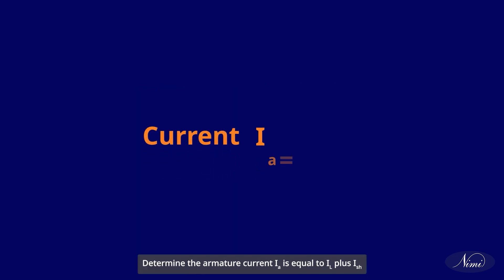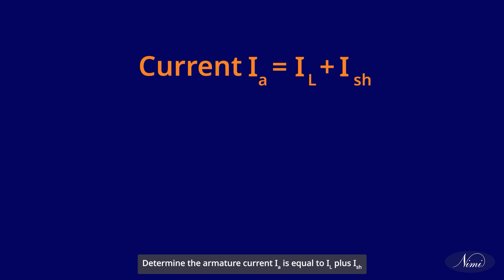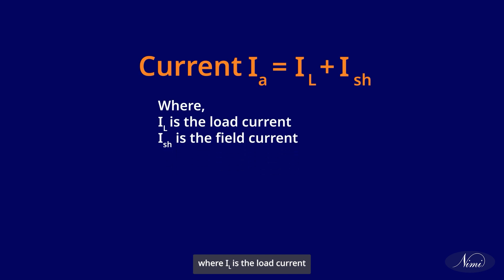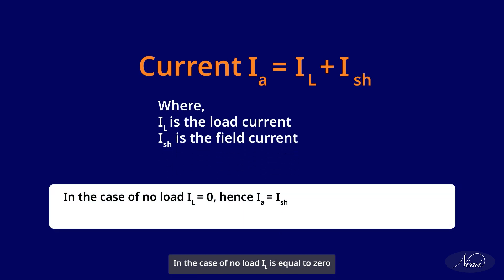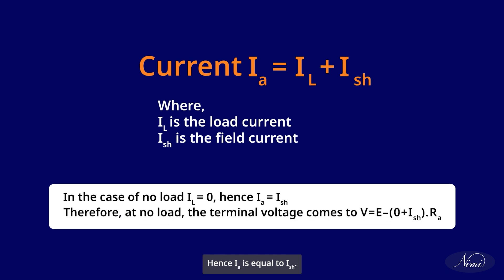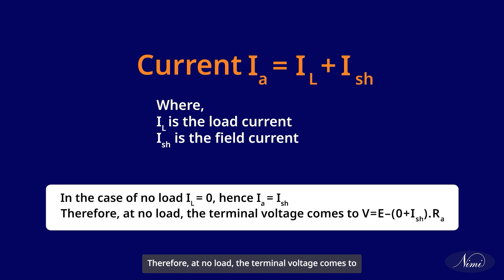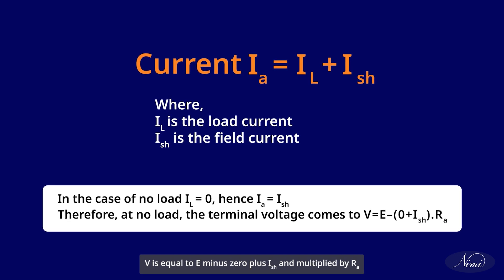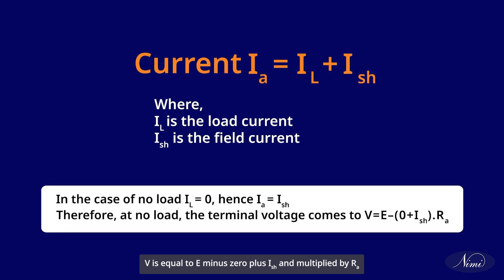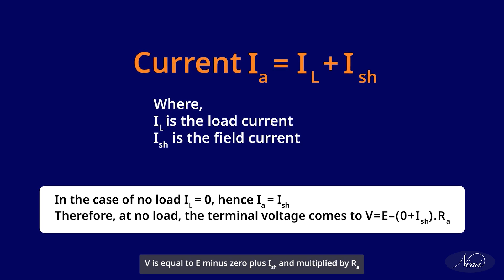Determine the armature current: Ia = Il + Ish, where Il is the load current and Ish is the field current. In the case of no load, Il is equal to zero; hence, Ia is equal to Ish. Therefore, at no load, the terminal voltage is: V = E − (0 + Ish) × Ra.